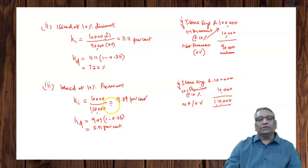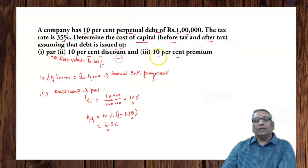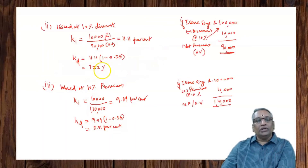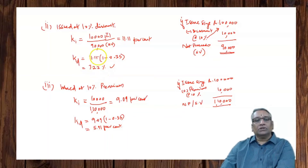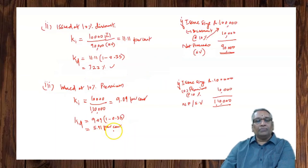This is how the cost of debt is calculated under circumstances where the debt is issued at par, at a discount, and at a premium. When issued at a discount, your cost is on the higher side — 7.22%. When issued at par it is 6.5%, and when issued at premium it is only 5.91%, which is the lowest.